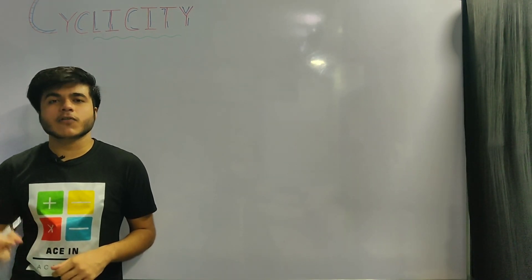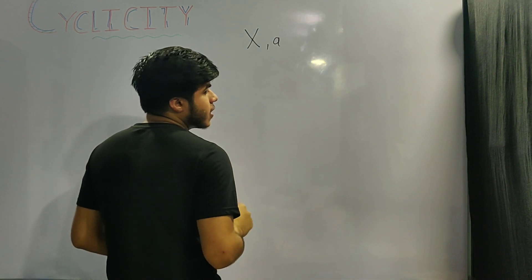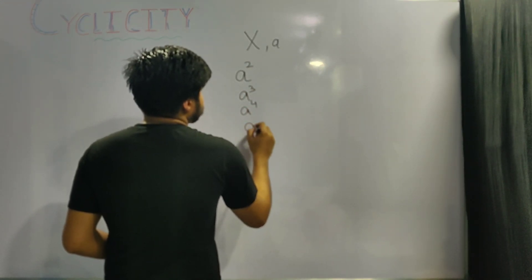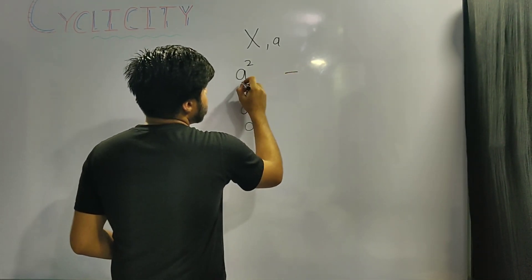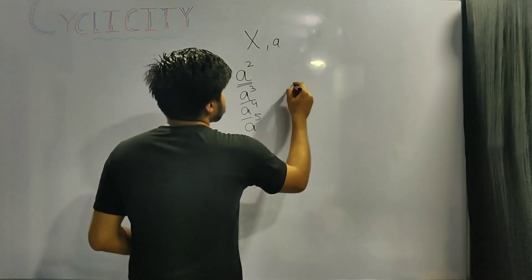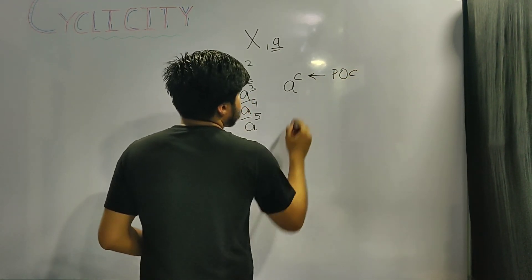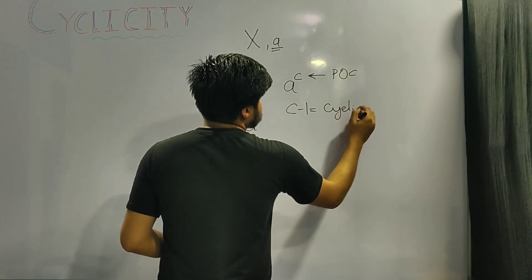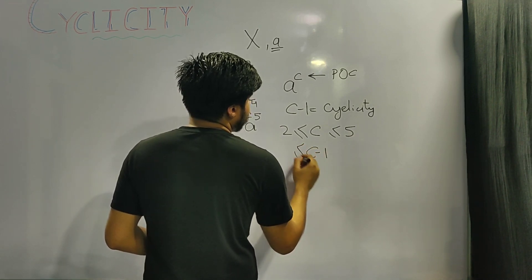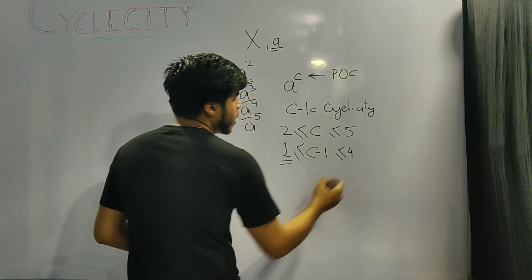Let's first find out how to find the cyclicity of a number. Suppose I've given you a number x whose unit digit is a. To find out the cyclicity, you raise the number a to different powers starting from 2, then 3, then 4, and up to 5. The point at which the unit digit starts repeating is our point of cyclicity. Suppose at a raised to the power c the unit digit again comes out to be a — then c minus 1 will be the value of the cyclicity. Since c can range between 2 to 5, cyclicity will have a value from 1 to 4.